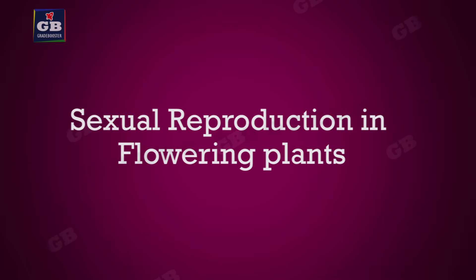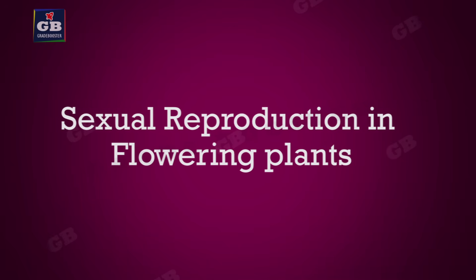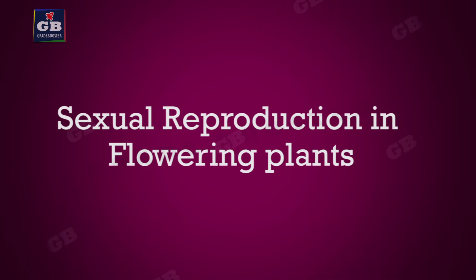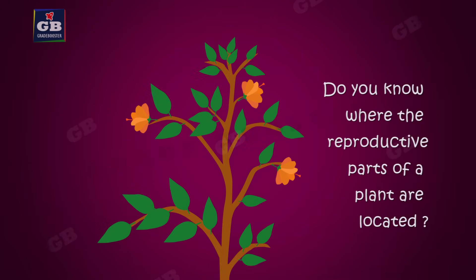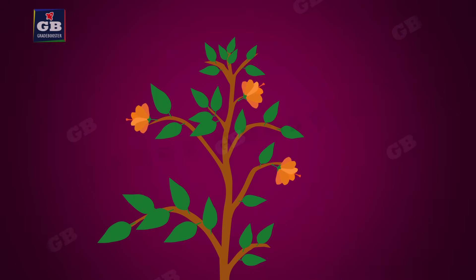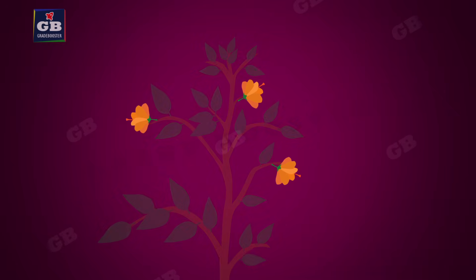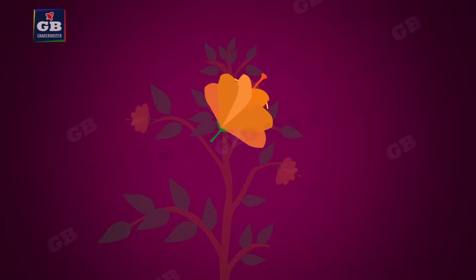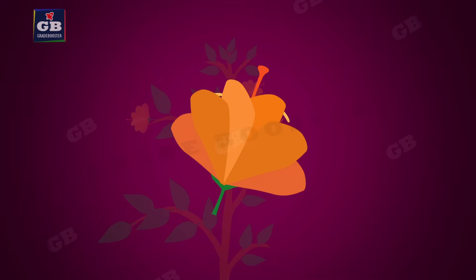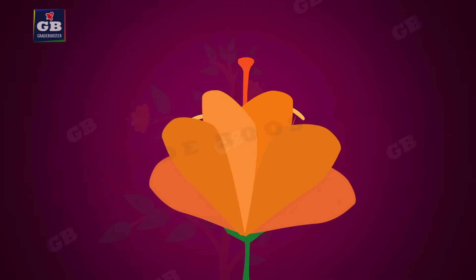Sexual reproduction in flowering plants. Do you know where the reproductive parts of a plant are located? The reproductive parts of the plant are located in the flower. Here is a flower — let us identify the reproductive parts in it.